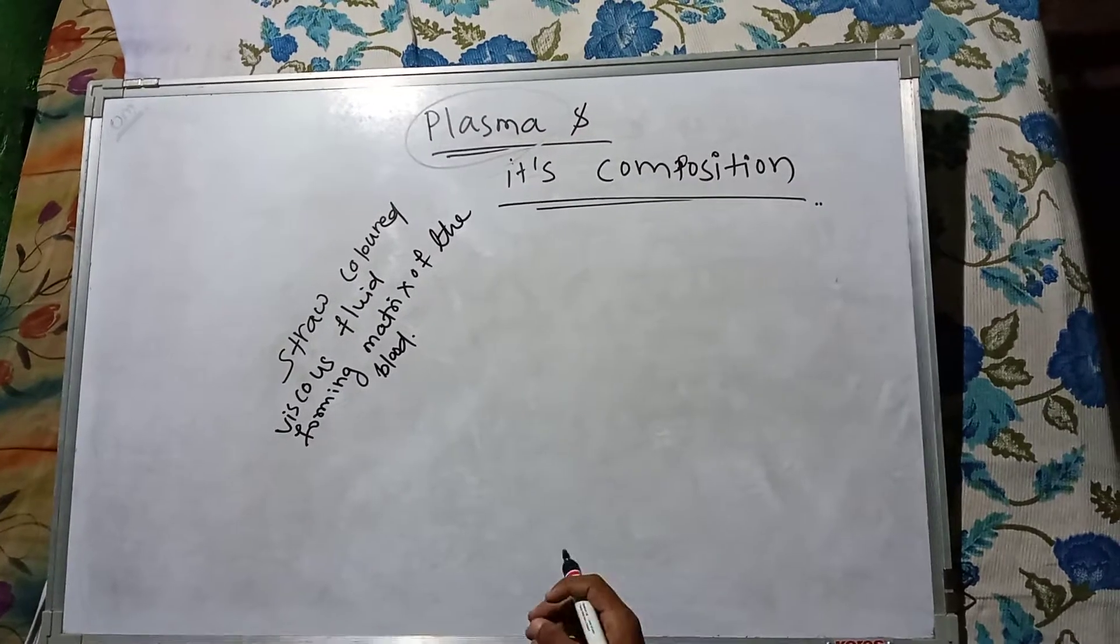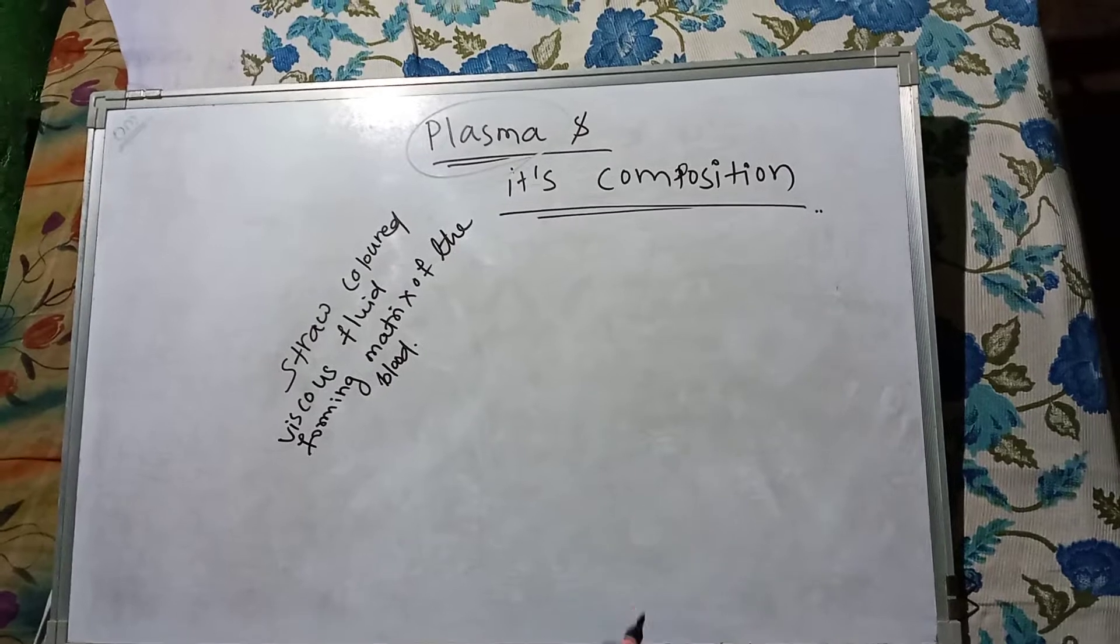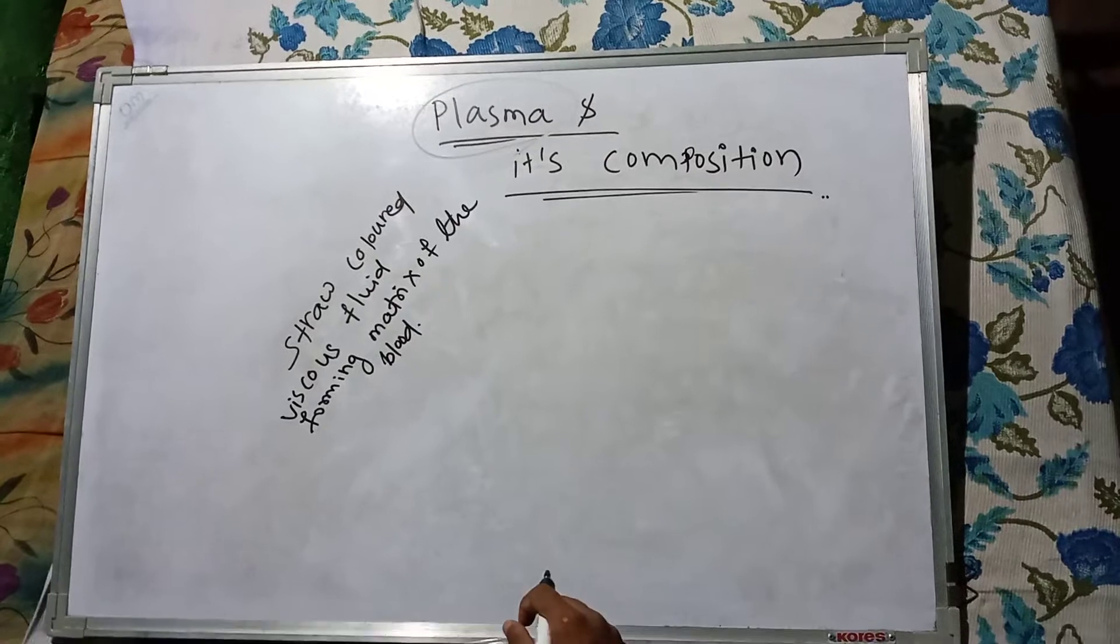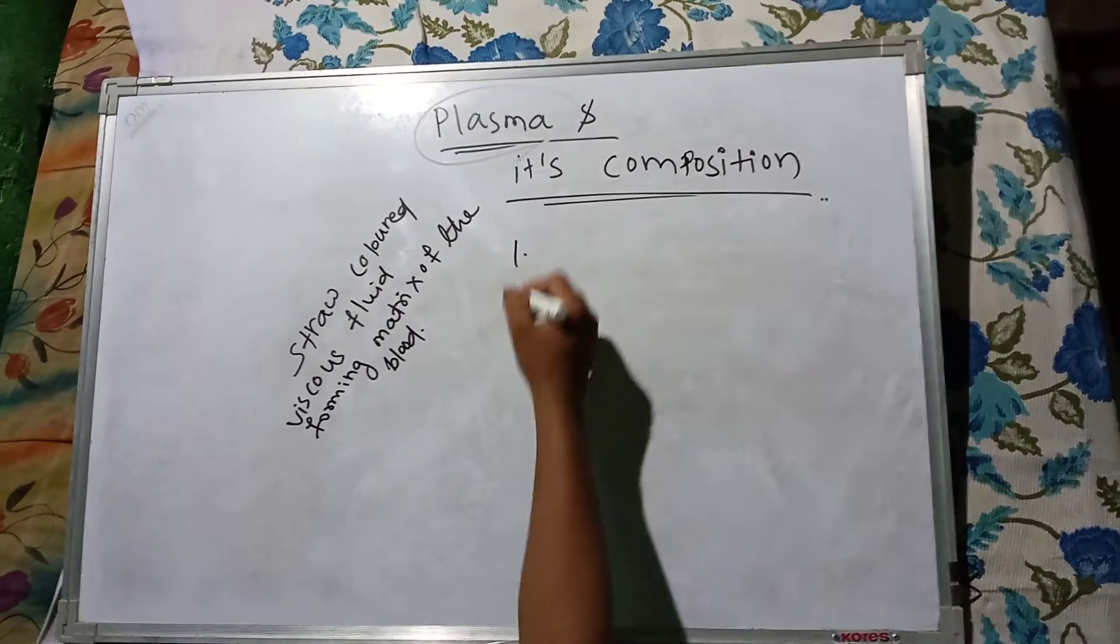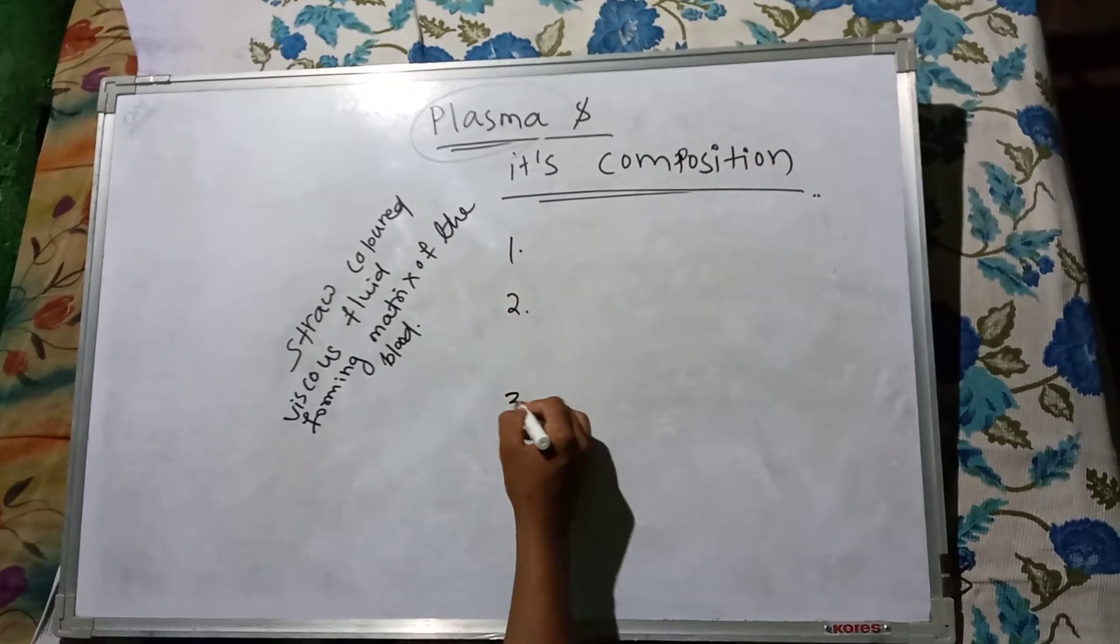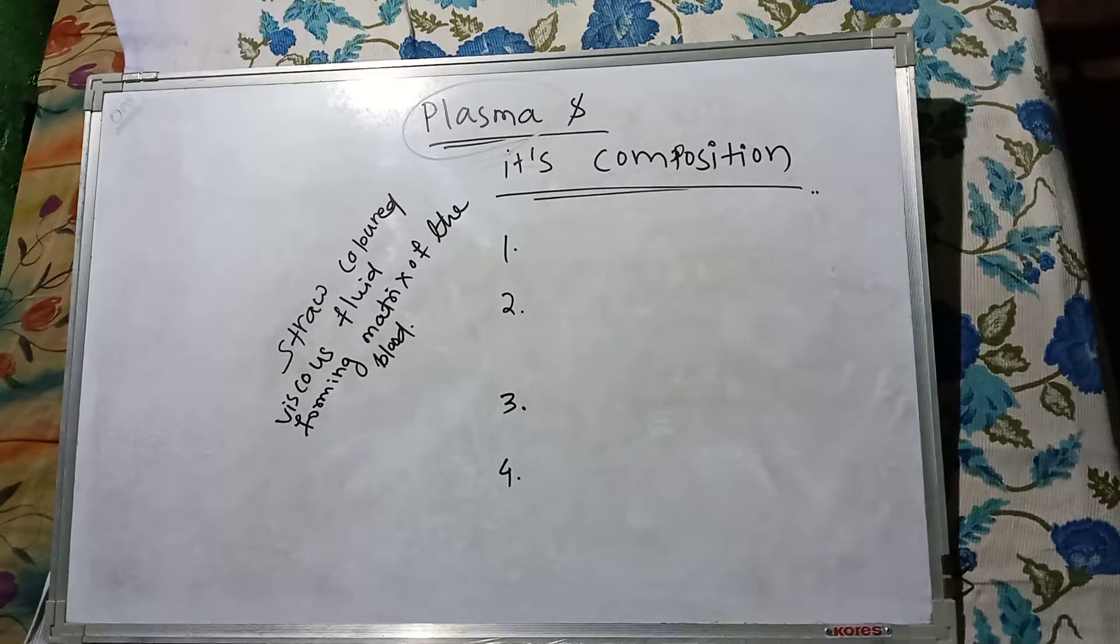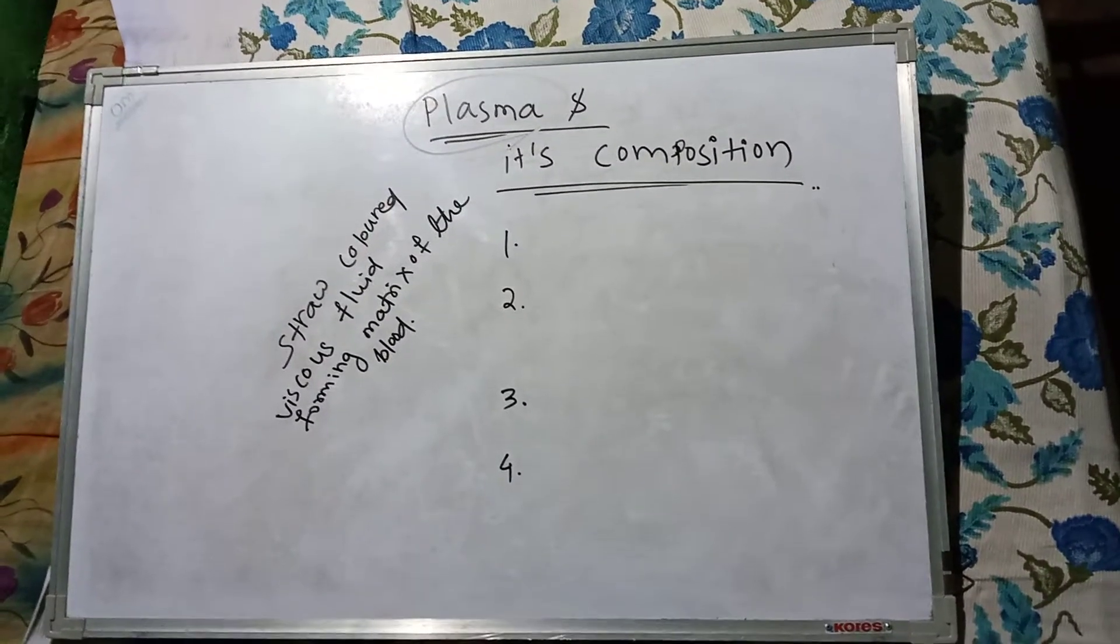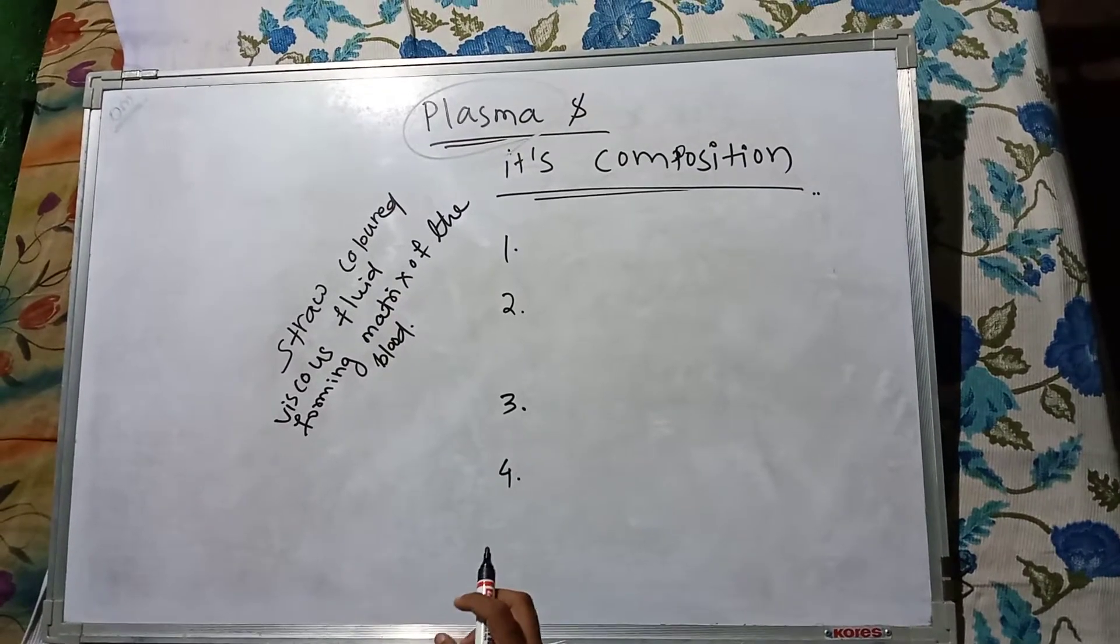Basically, the composition of plasma is of four types: one, two, three, and four. The first type is water, or H2O.